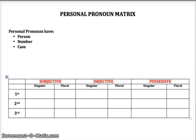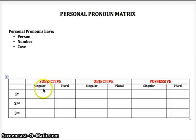The second characteristic of personal pronouns is that they have number. In English, when we refer to number, what we mean is either one or more than one — in other words, they can either be singular or they can be plural.